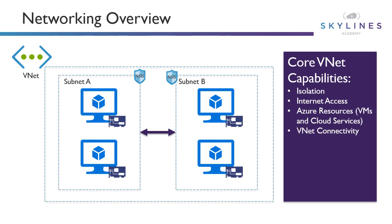You can connect VNets to other VNets using VNet Peering, as well as connectivity to on-premises using VPN gateway, ExpressRoute, and other technologies. There's also a traffic filter called an NSG — a Network Security Group — to restrict traffic. You can route traffic through devices like Palo Alto or Checkpoint for IDS and IPS. By default, all machines in a subnet can talk to each other, and VMs in a peered VNet can communicate across. Custom routing to redirect traffic through those devices is also available.